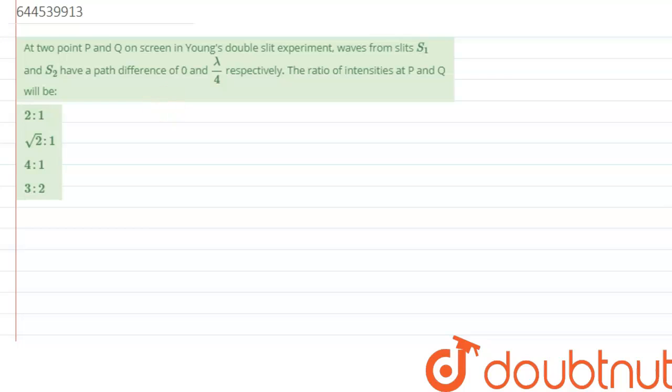Hi everyone, we're given a question which says: at two points P and Q on the screen in Young's double slit experiment, waves from slits S1 and S2 have path differences of 0 and λ/4 respectively.